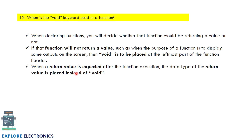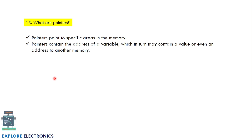What are pointers in C? Pointers point to a specific area in memory — they store the address of a memory location. A pointer contains the address of a variable, which in turn may contain a value or even an address to another memory location. As the name itself says, a pointer points to a location in memory.